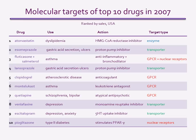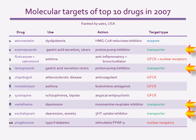What I've shown you is how common different drug targets are in terms of the numbers of drugs that bind to them. Now I'm going to show you the targets of the most popular drugs, at least as indicated by sales. As much as anything, this reflects the prevalence of the disease being treated. The table here lists the 10 best-selling drugs in 2007. Despite most targets being enzymes, only one of the top-selling drugs acts on an enzyme. Half of the drugs act on G-protein-coupled receptors, and most of the others act on transporters.